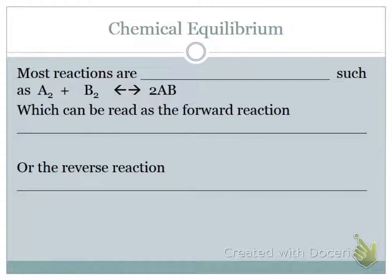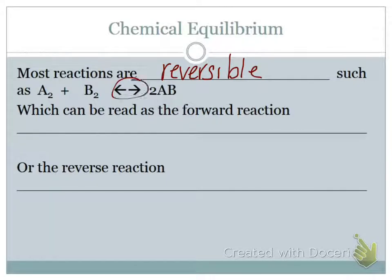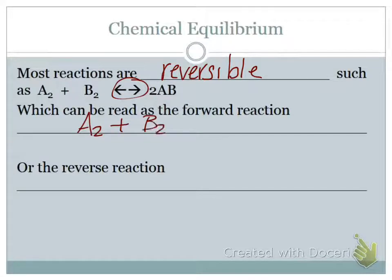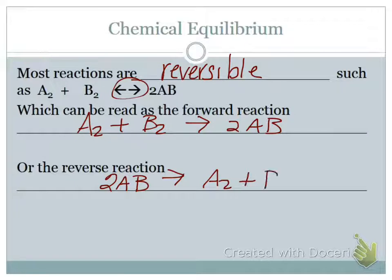First of all, you need to know that most chemical reactions are reversible. The way that we show that something is reversible is we use this double-headed arrow. That means it is possible to have the forward reaction, which would be making the products, or we could reverse it and the products could break down and reform the reactants. So when we see that double-headed arrow, we have to know that both reactions are possible.